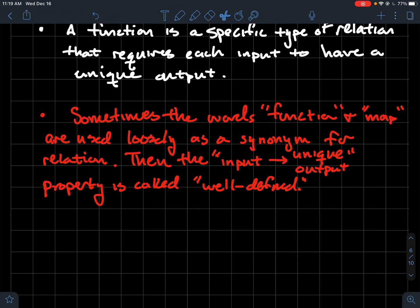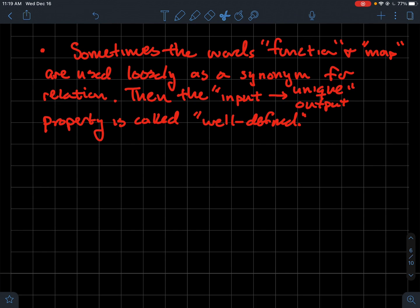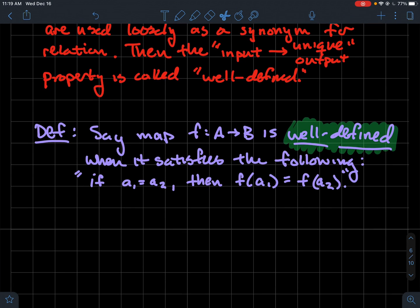So that's the property we're going to talk about now. This property of having the input be associated to a unique output, that property is called the well-defined property.